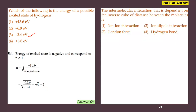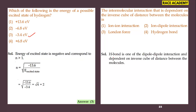Next: the intermolecular interaction that depends on the inverse cube of distance between molecules. This is asked from the intermolecular forces concept in the states of matter chapter. Hydrogen bonding is a dipole-dipole interaction dependent on the inverse cube of distance between molecules. So the answer is the fourth option.